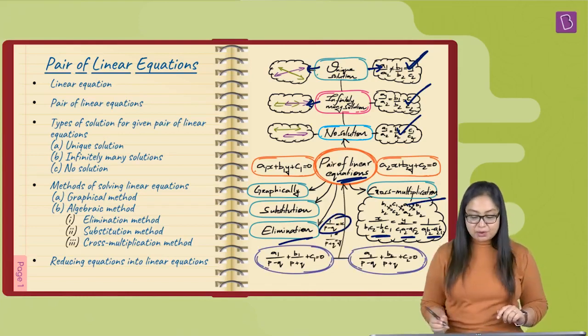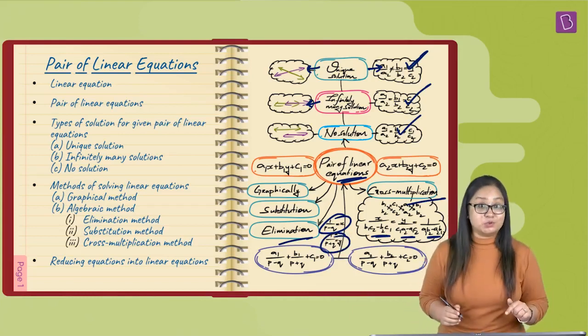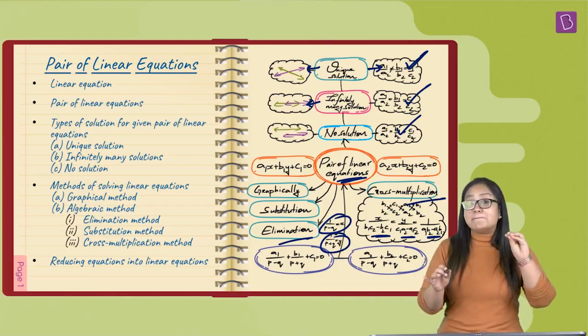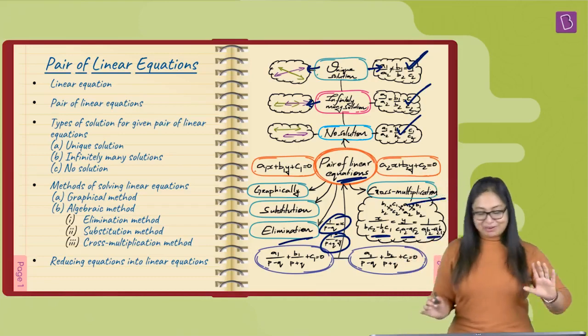Here we go, x comes out 1 upon p minus q and y comes out 1 upon p plus q. You see, this is how we create a mind map for one particular chapter.